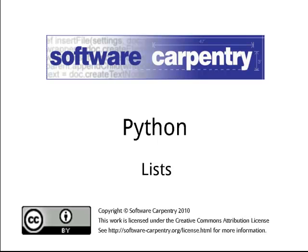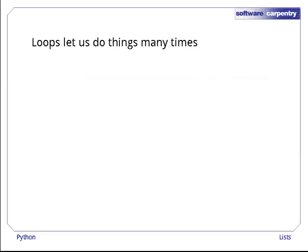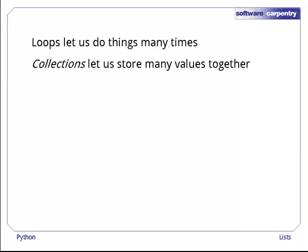Hello, and welcome to the fourth episode of the Software Carpentry Lecture on Python. In this episode, we'll have a look at lists. While loops let us do things many times, collections let us store many values together so that we don't have to define new variables for each piece of data we want to work with. The most popular kind of collection in Python is the list, which takes the place of arrays in languages like C and Fortran.